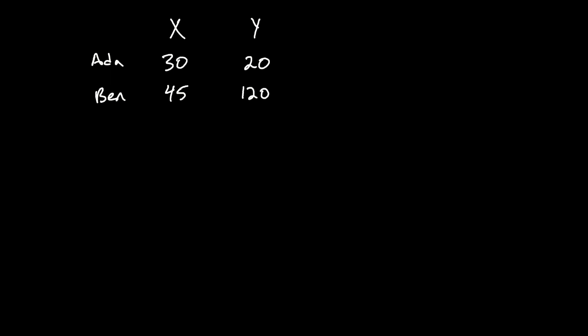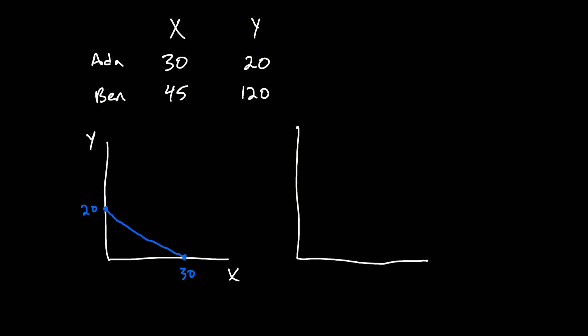Before we start talking about specialization and trade, let's see what Ben and Ada can do on their own. I'll provide a graphical illustration by graphing each of their production possibility frontiers, or PPFs. Starting with Ada, with x on the x-axis and y on the y-axis: if she spent all her time producing x she could produce 30 units, and if she spent all her time producing y she could produce 20 units. Assuming constant linear trade-offs, she can also produce combinations of x and y along her PPF.